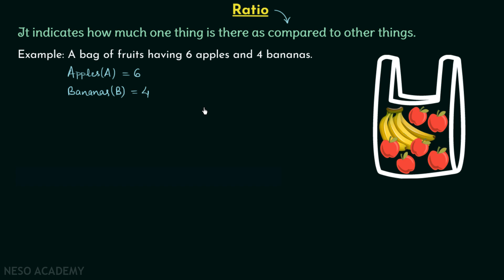Now if I ask you to tell me the comparison between the apples and bananas, then you will say there are 6 apples as compared to 4 bananas. So we say A, which is the number of apples, compared to B, which is the number of bananas, is equal to 6 ratio 4. The comparison is the ratio, and we read it: A is to B is equal to 6 is to 4.